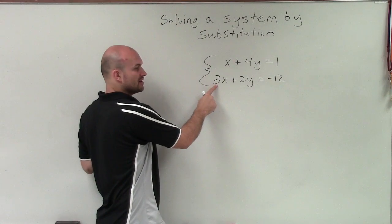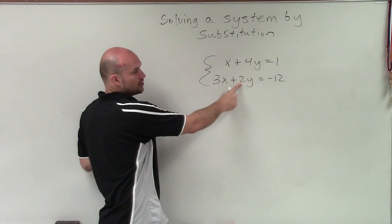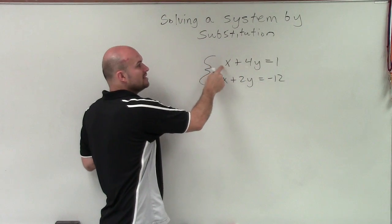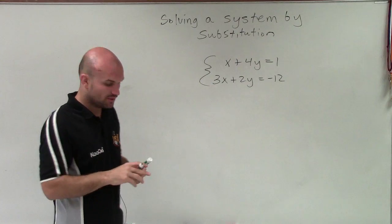Well, this x has a coefficient of 3. This one has a coefficient of 2. This variable has a coefficient of 4. And this one has a coefficient of 1. So therefore, that's the variable that I'm going to want to isolate.